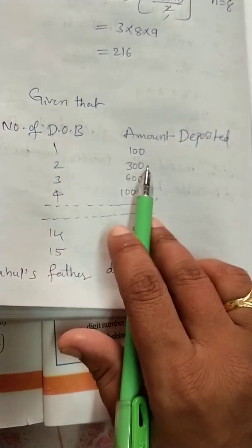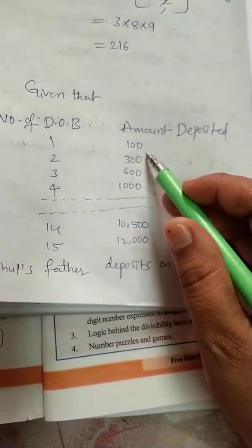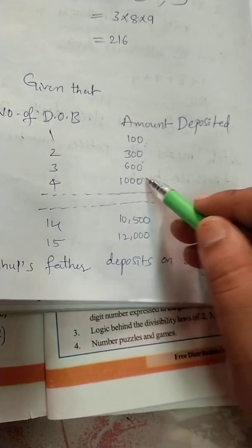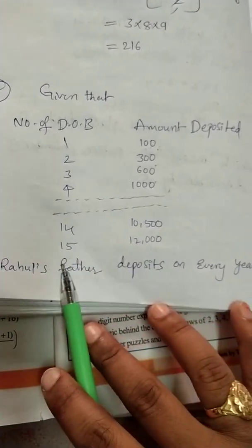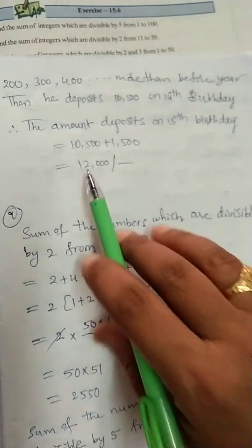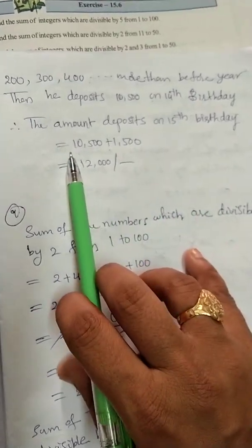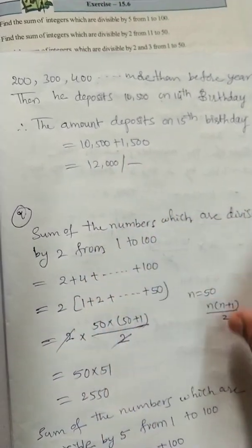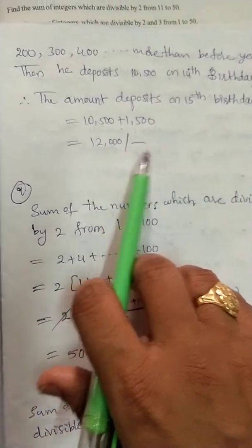Looking at the differences: 200, 300, 400 — the increments increase by 100 each year. Continuing this pattern, the deposit on the 14th birthday is 10,500 and on the 15th birthday it comes to 12,000. So the amount deposited on the 15th birthday is 12,000 rupees.